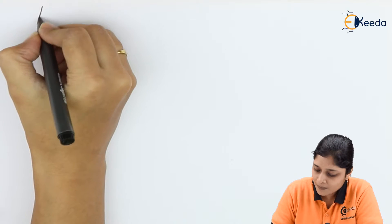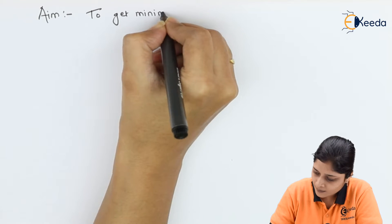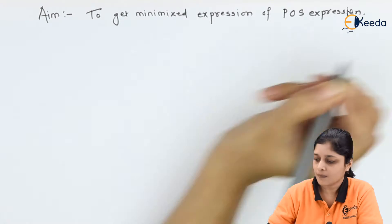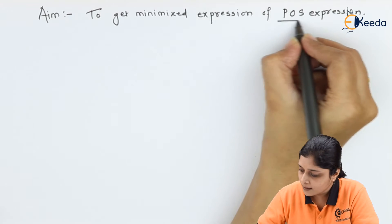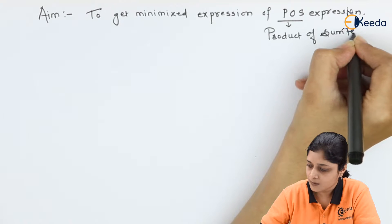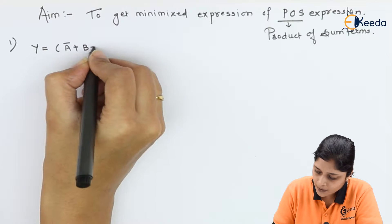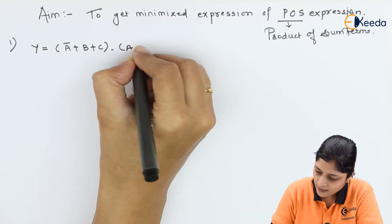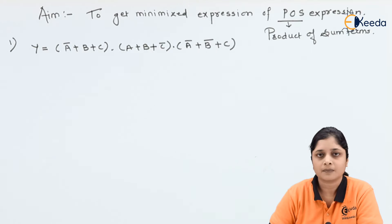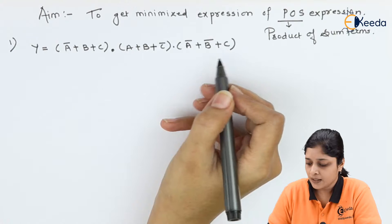Your aim is to get the minimized equation of a POS expression. We are going to focus on Product of Sum terms. The first example is: Y equals (A̅ + B + C) · (A + B + C̅) · (A̅ + B̅ + C). This is a form of POS expression — Product of Sum — and you have to calculate the minimized form using K-map.